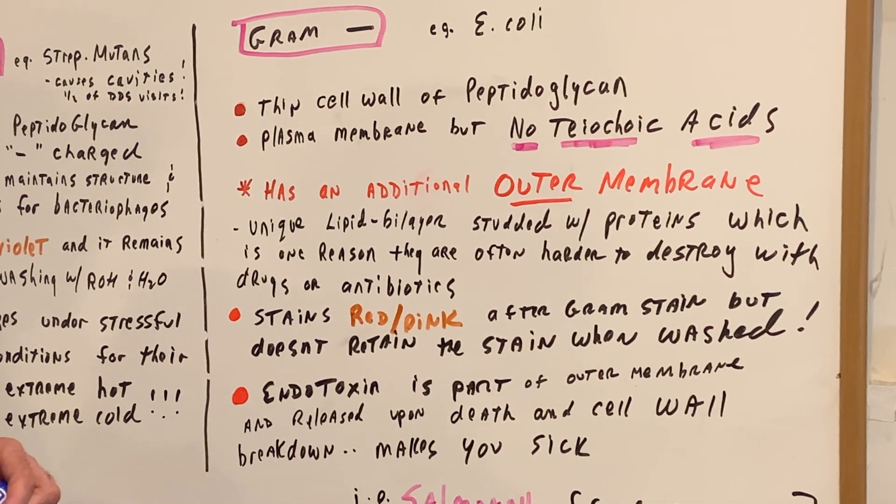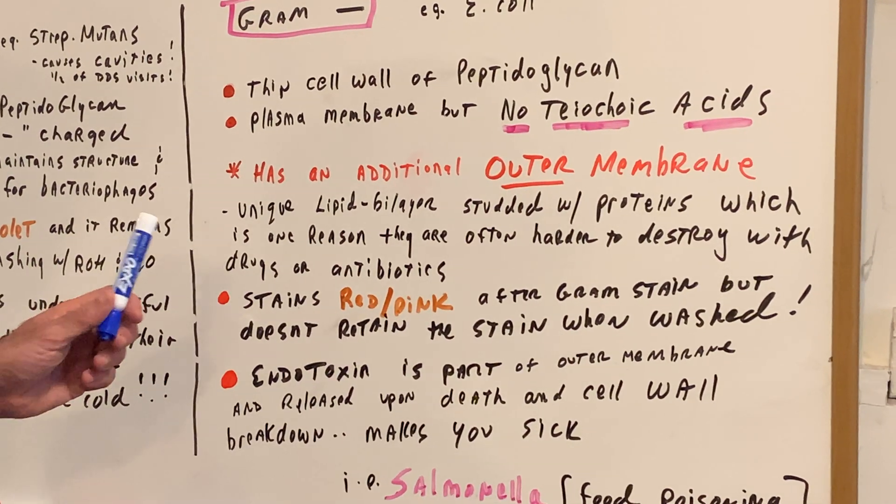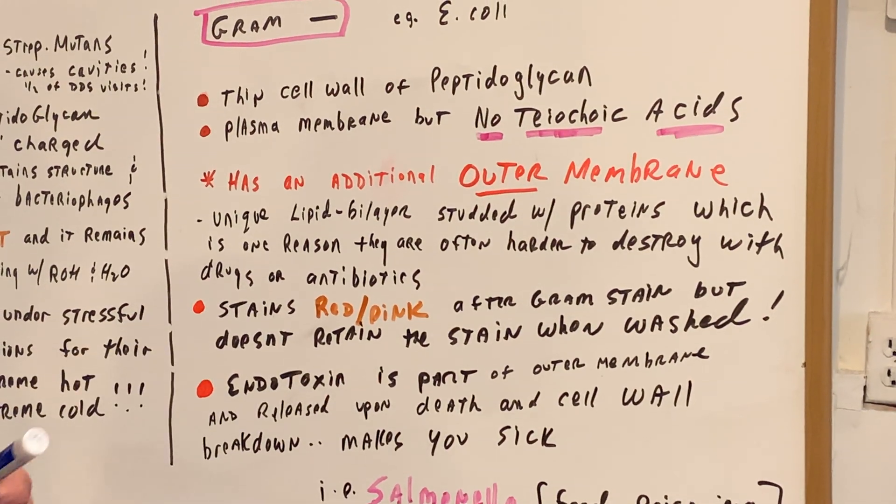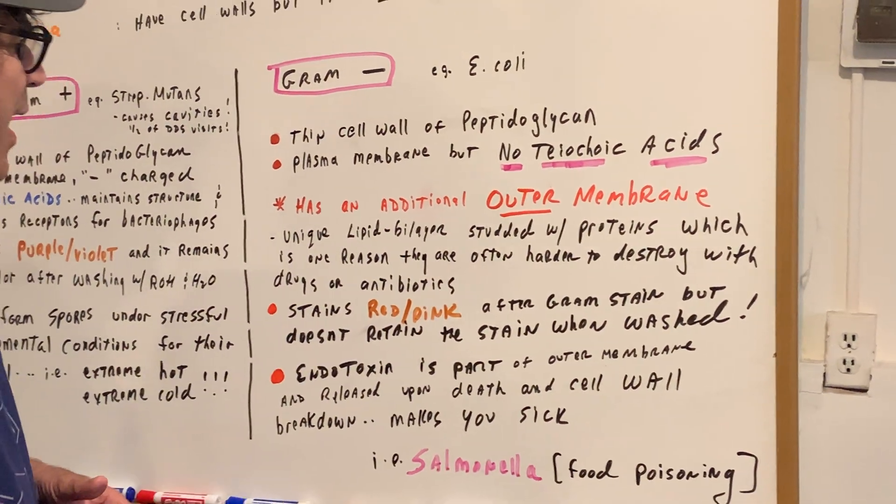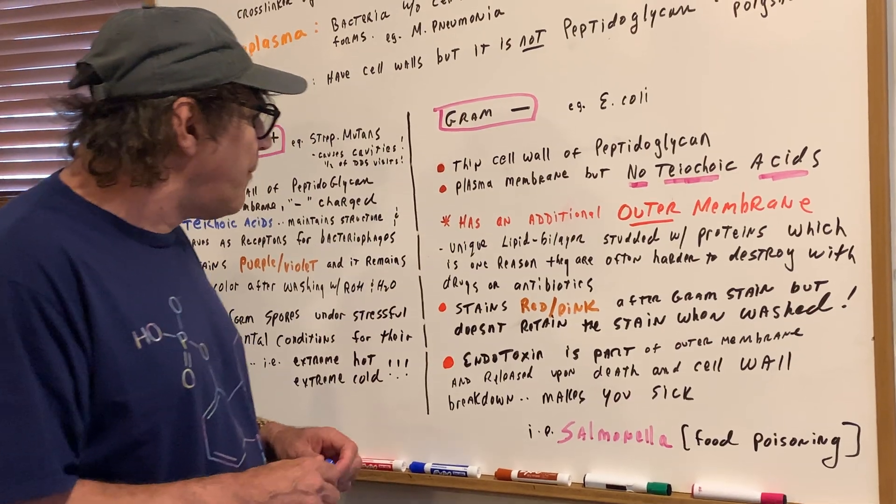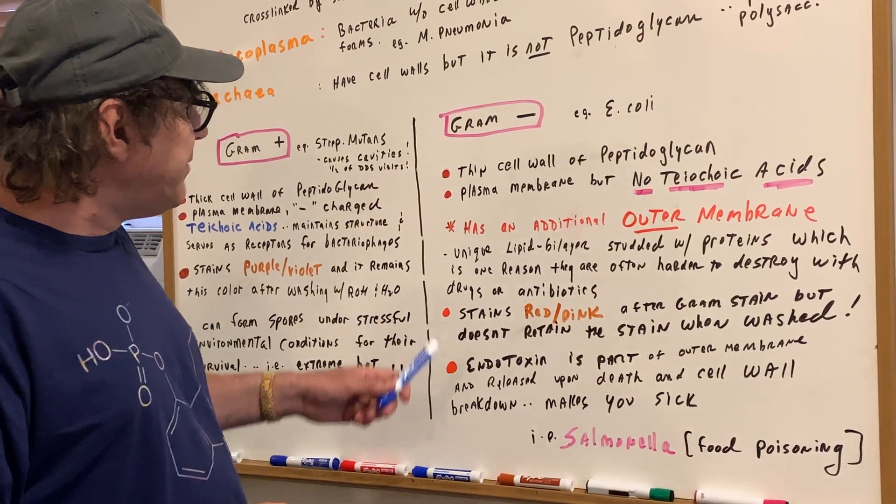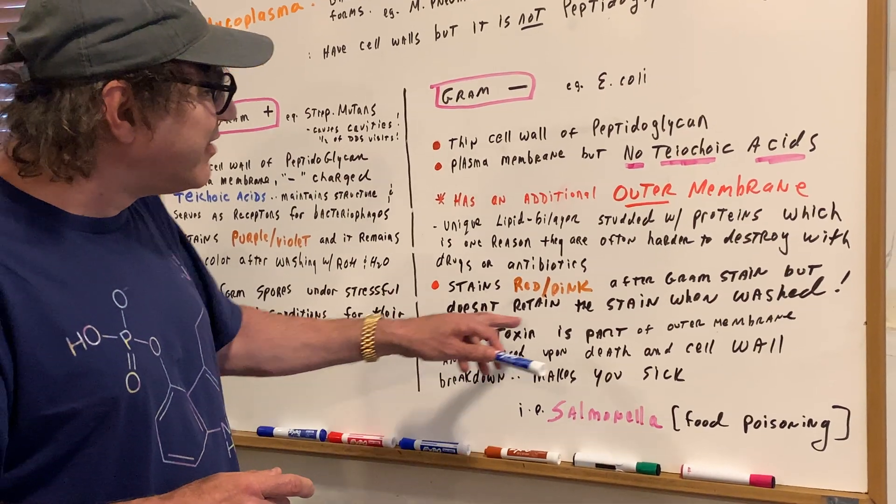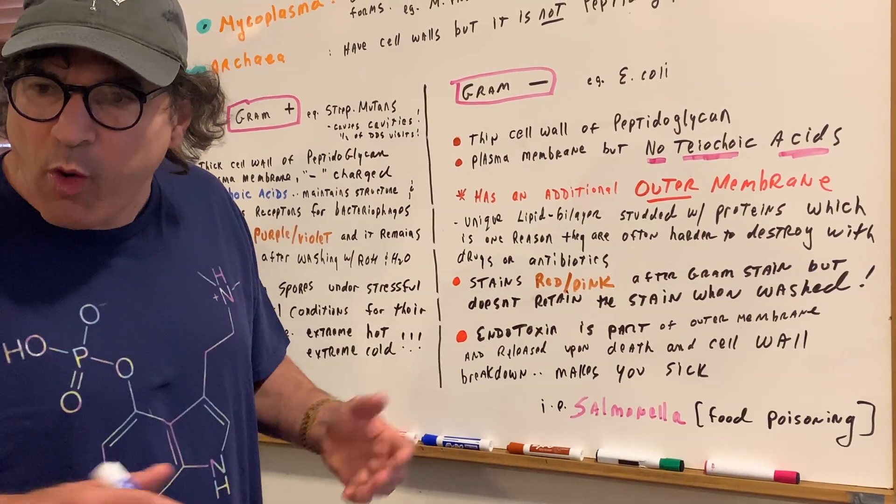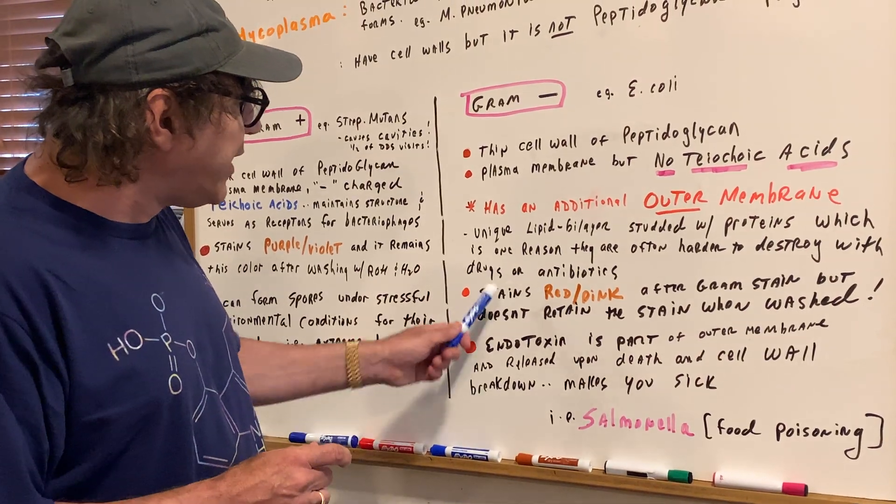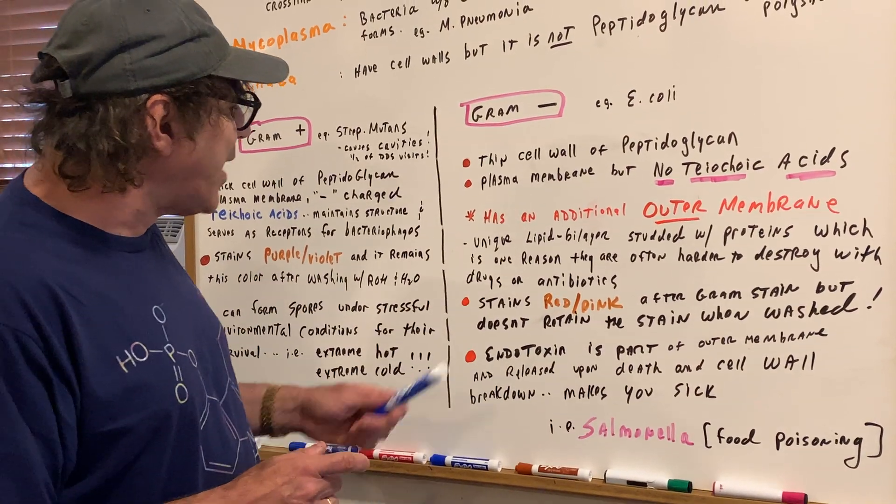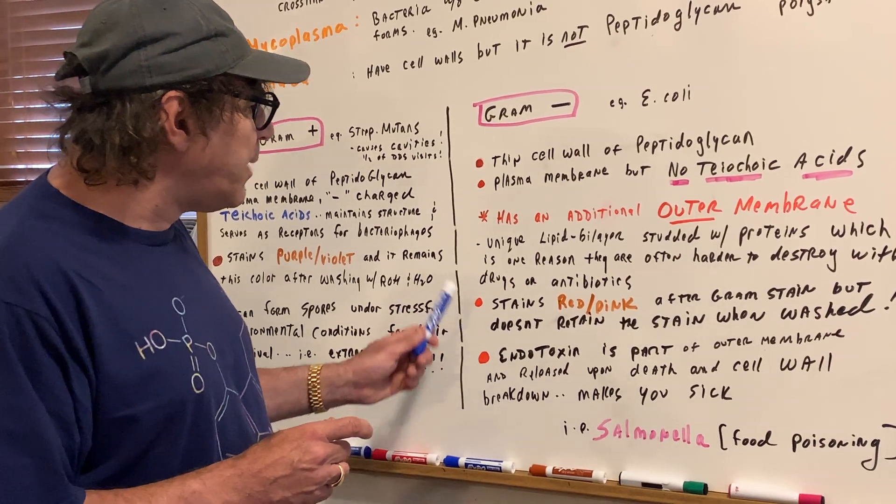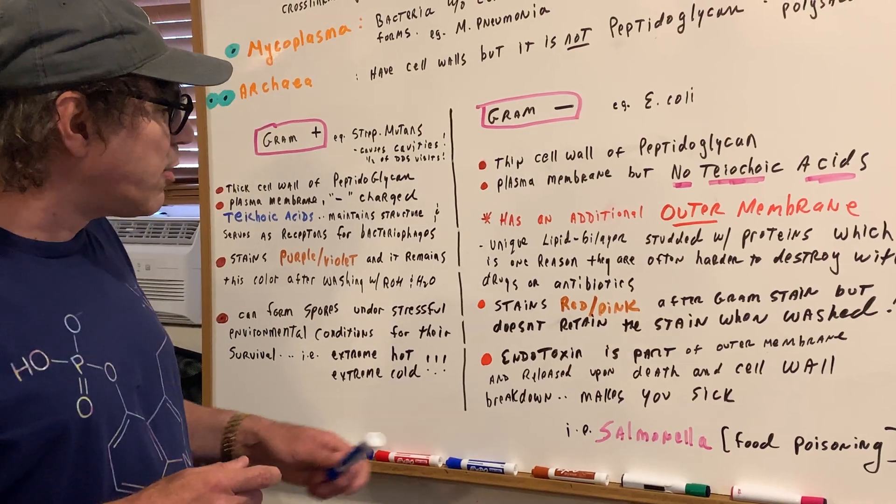This is a lipid bilayer studded with proteins, which is one reason these are very difficult to destroy or remove from the body if we have antibiotics or drugs. Gram-negative stains red or pink after the gram stain, but it doesn't retain the stain, and it washes out. So, that we want to keep in mind, too. These are two big things about the stain. So, it stains red or pink after the stain, but it doesn't retain it when we wash it with water and alcohol.